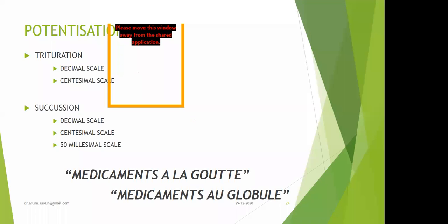The general classification between decimal and centesimal scale: the decimal scale was founded by Dr. Hering, whereas the centesimal scale was founded by Dr. Samuel Hahnemann. The drug-vehicle ratio is 1 to 9 on decimal, whereas 1 to 99 on centesimal.